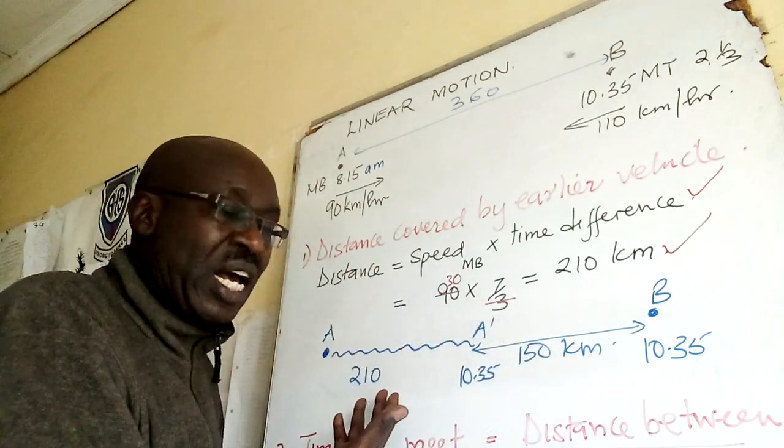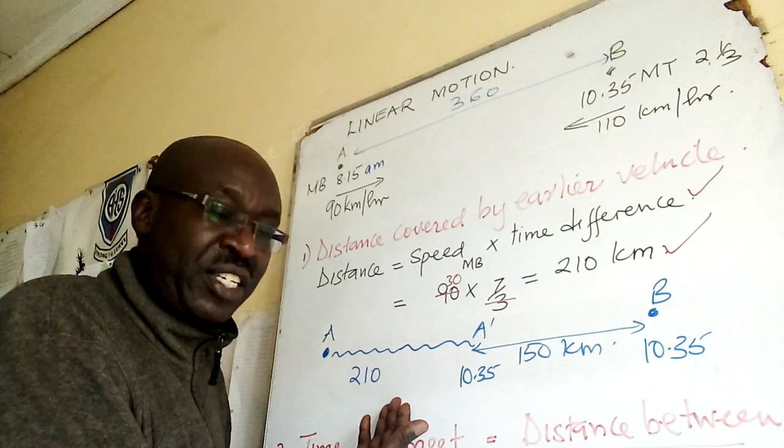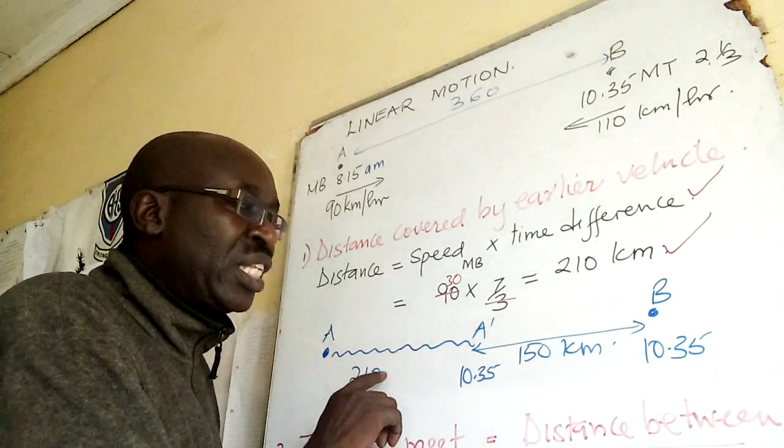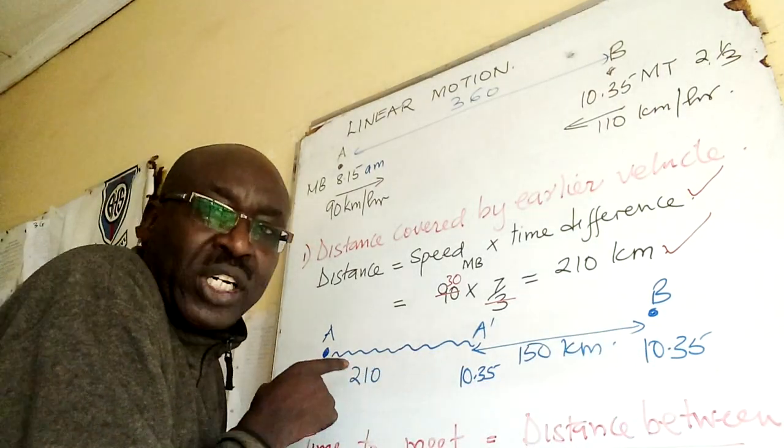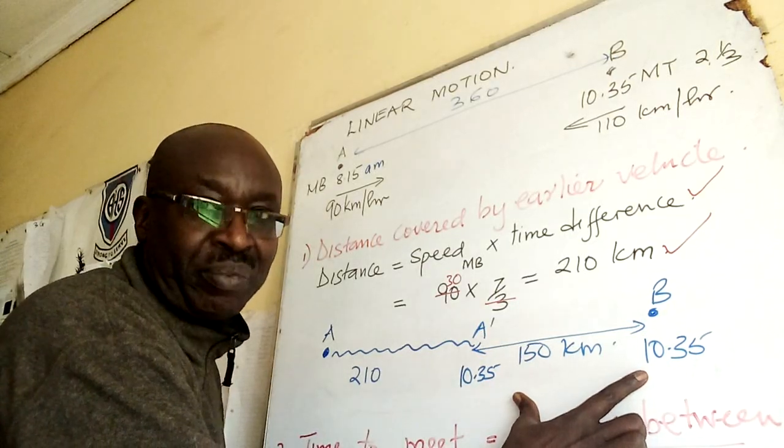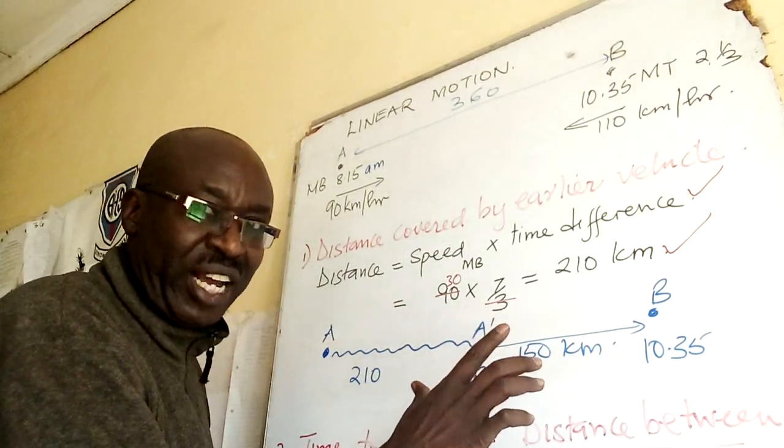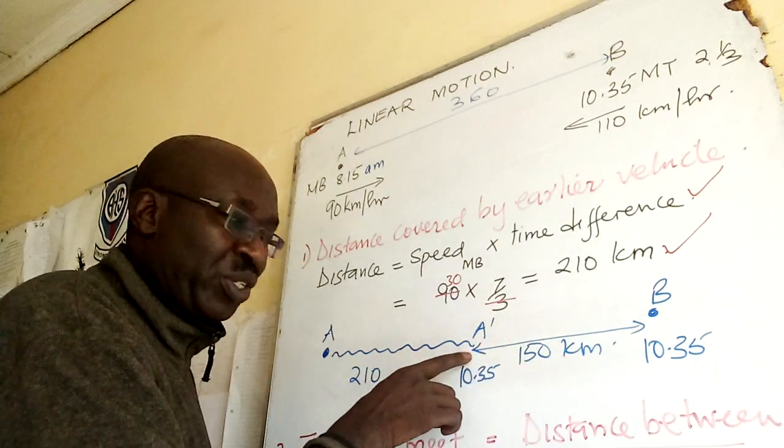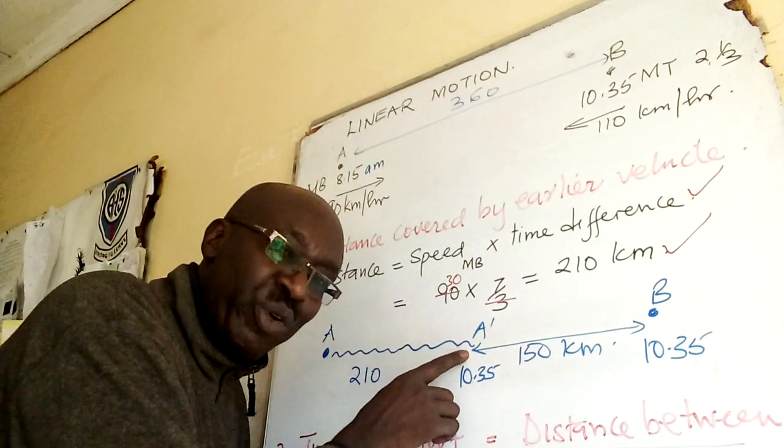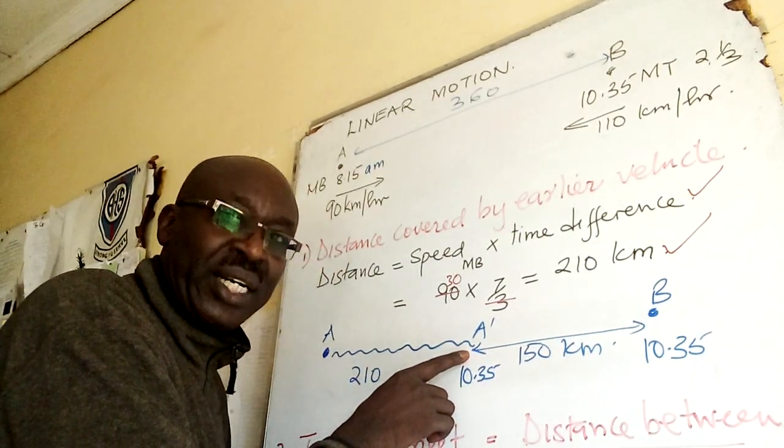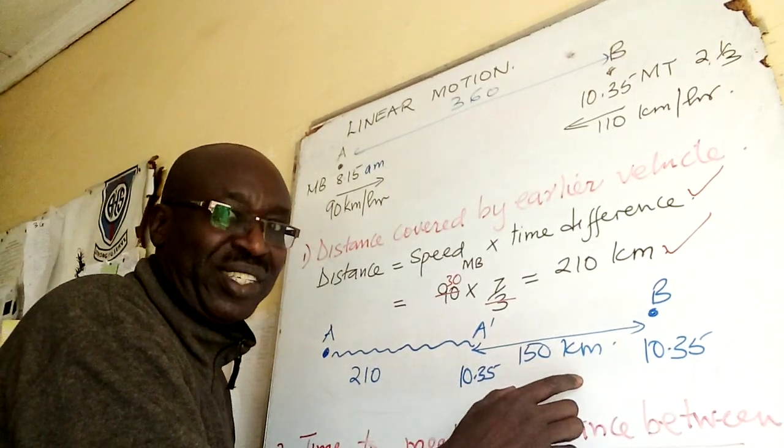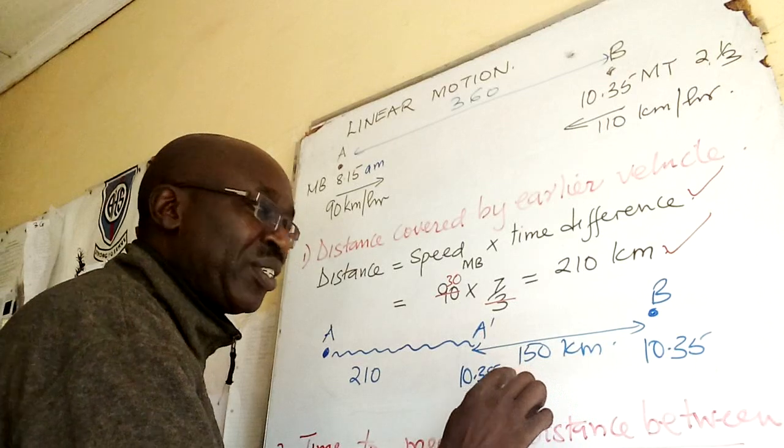So at 10:35 it is here while the matatu is at B. That is the simple diagram. Now once you understand this you can compute: the total distance is 360, what has been covered so far is 210, so the distance here is 360 minus 210, which is 150.